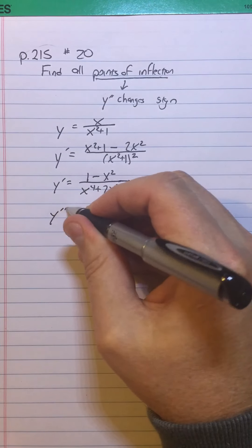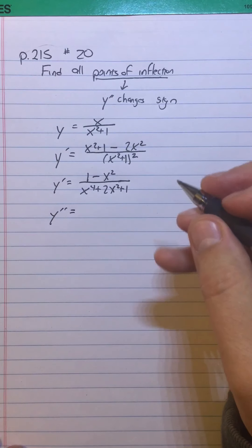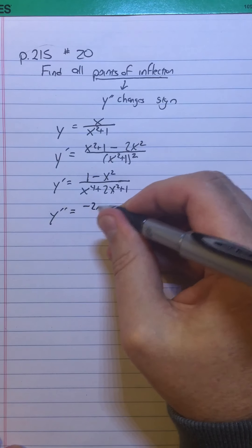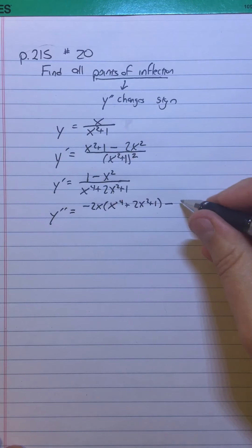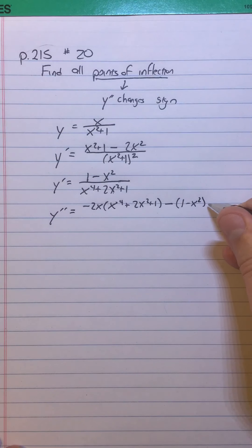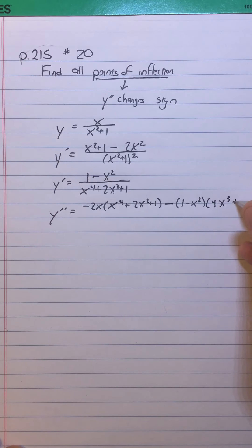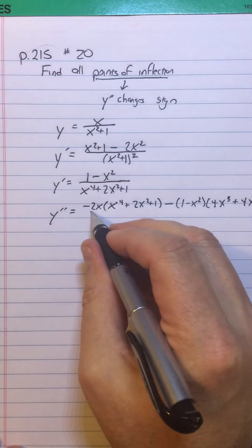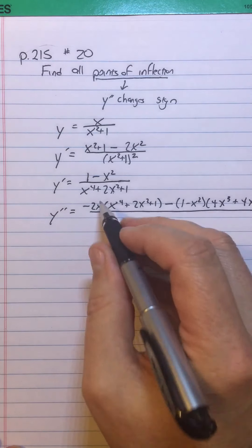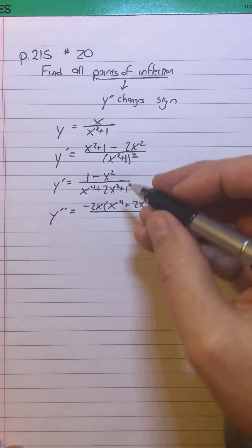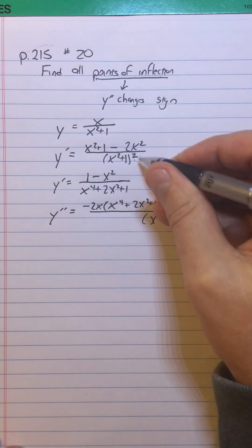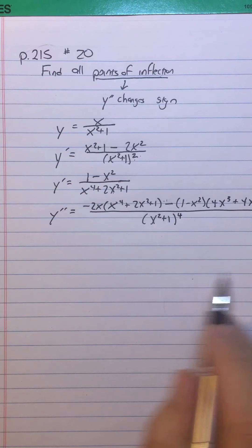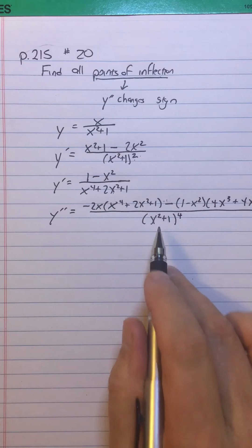Now I've got to get Y double prime, and this is where things get a little messy. I have to do F prime times G, so that's negative 2X times (X to the fourth plus 2X squared plus 1), minus F times G prime, so that's (1 minus X squared) times G prime, which is 4X cubed plus 4X. For the denominator, I have to square the denominator, but I'll go back to (X squared plus 1) to the fourth power just to keep it simpler — since this and this are the same — and I don't have to do another derivative.